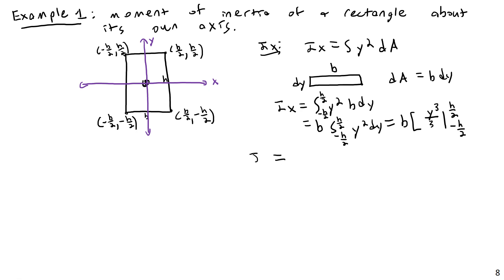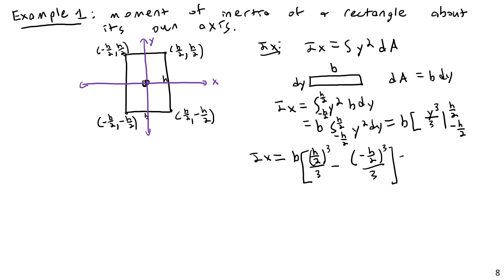Working through the bounds substitution: B times [(H/2)³/3 − (−H/2)³/3]. That gives B times [H³/24 − (−H³/24)], because (H/2)³ = H³/8 and dividing by 3 gives H³/24. The negative cubed stays negative, so we subtract a negative, giving H³/24 plus H³/24.